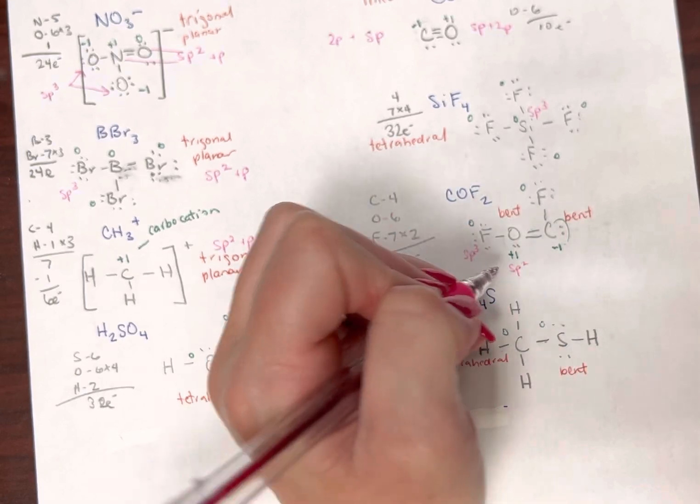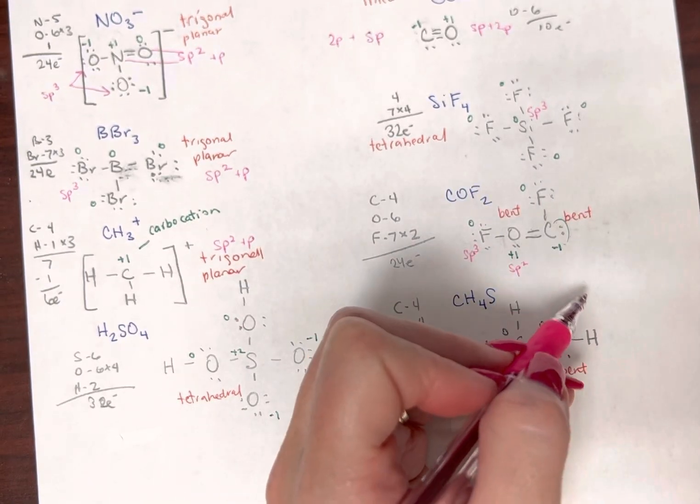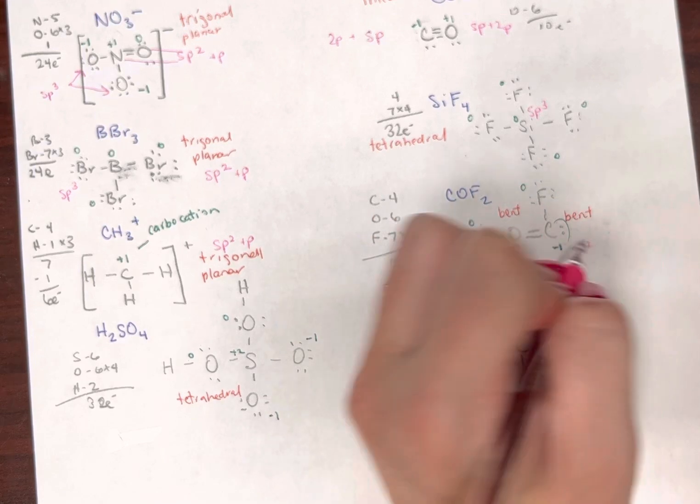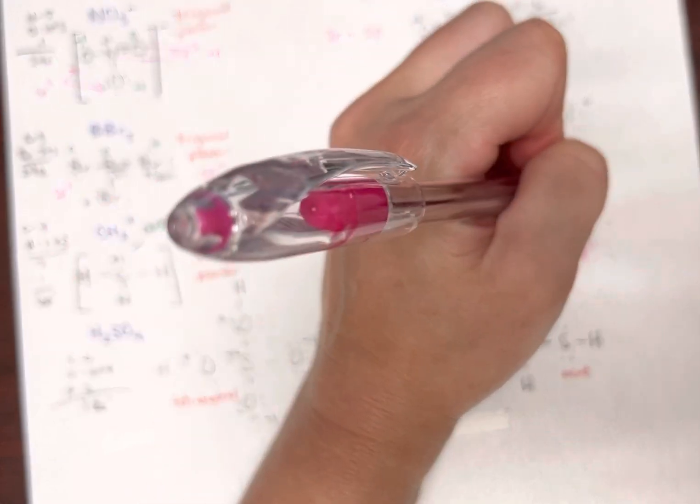This carbon has one, two, three friends. It is also sp2. This fluorine has one, two, three, four friends. Sp3.